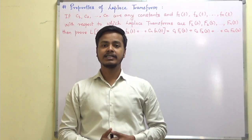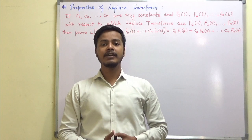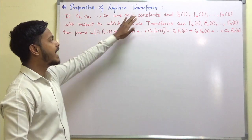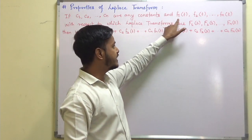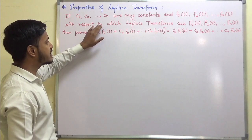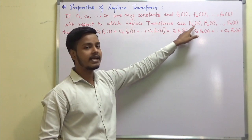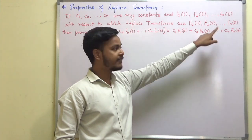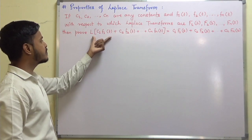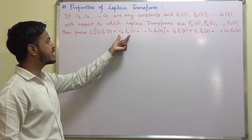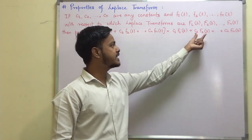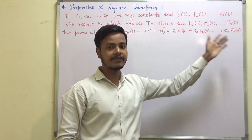Let us start with the very first property. If c1, c2, ..., cn are any constants and f1(t), f2(t), ..., fn(t) are functions whose Laplace transforms are F1(s), F2(s), ..., Fn(s), then prove that the Laplace transform of c1·f1(t) + c2·f2(t) + ... + cn·fn(t) equals c1·F1(s) + c2·F2(s) + ... + cn·Fn(s).